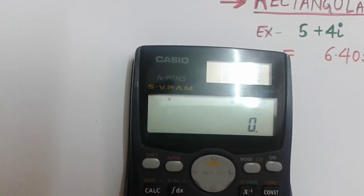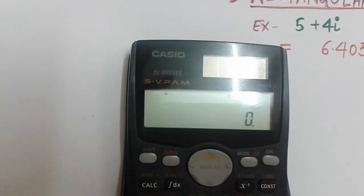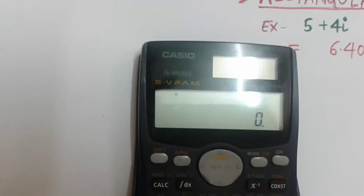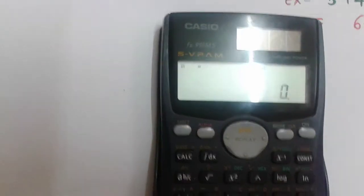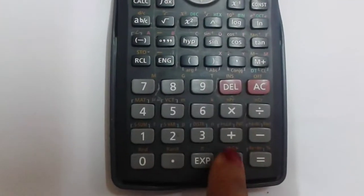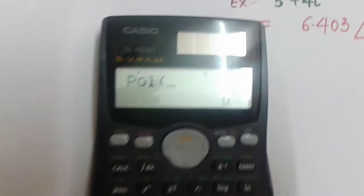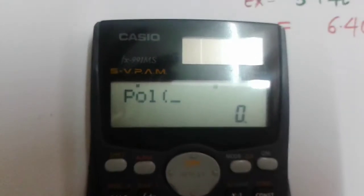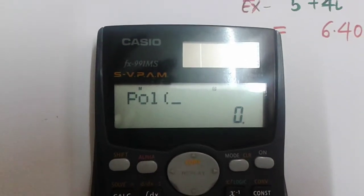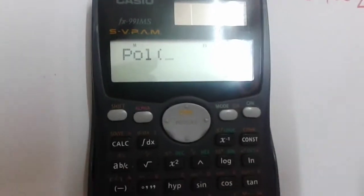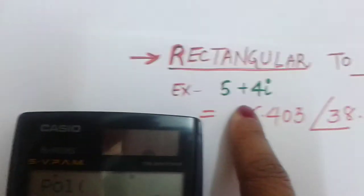If you select 1 and I want to convert into polar form, directly you have to take SHIFT and then press this polar PLUS. It will come like this: Pol, and in brackets. You have to put your values, so 5 comma 4, bracket close.